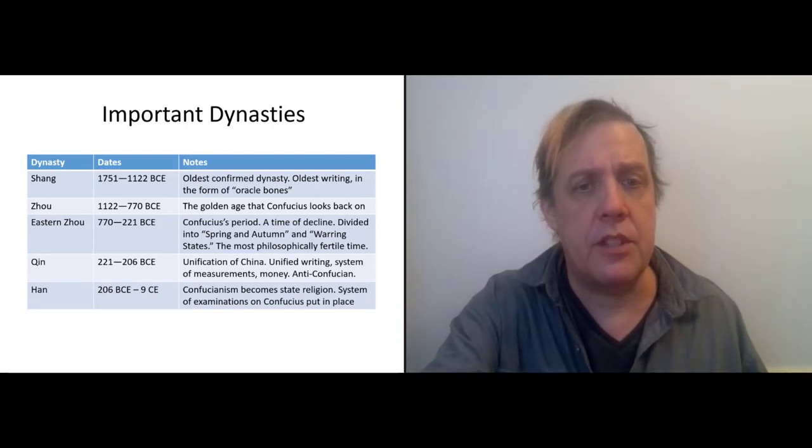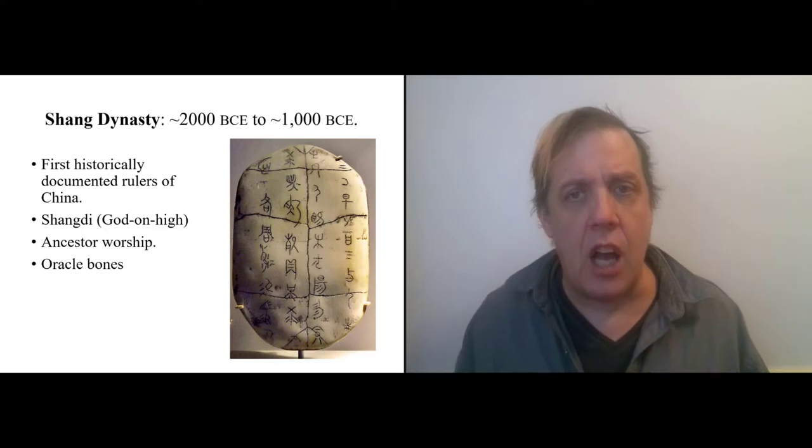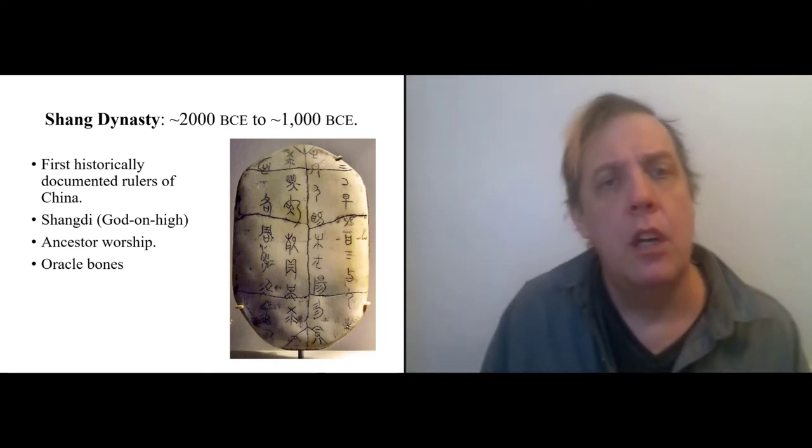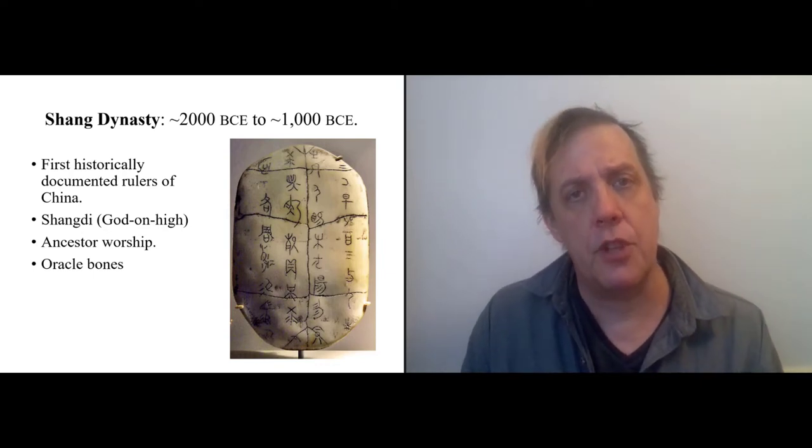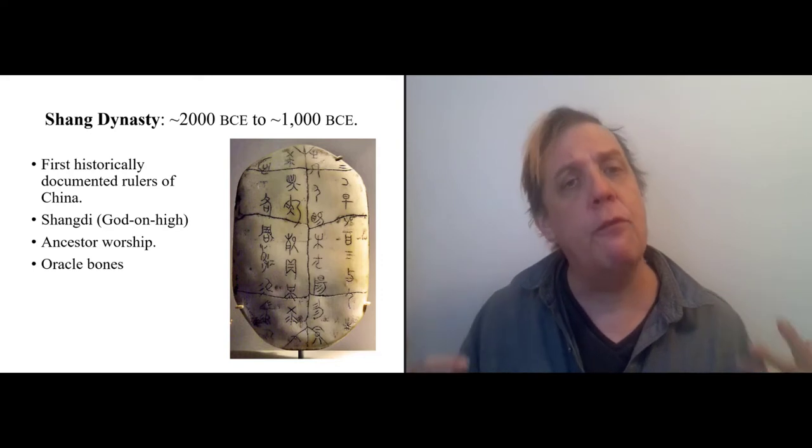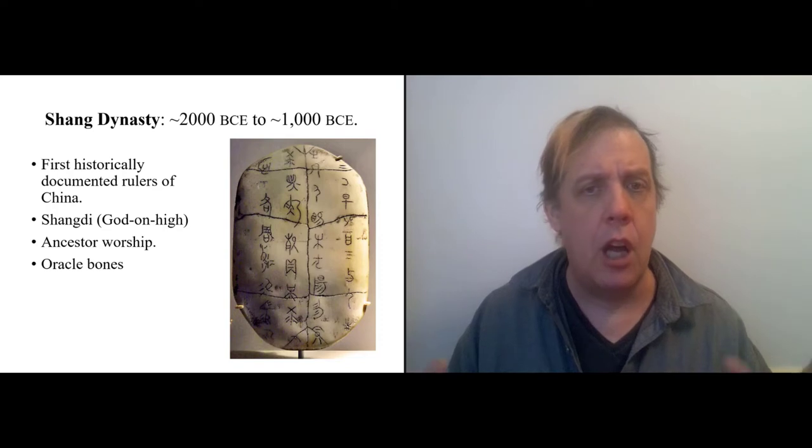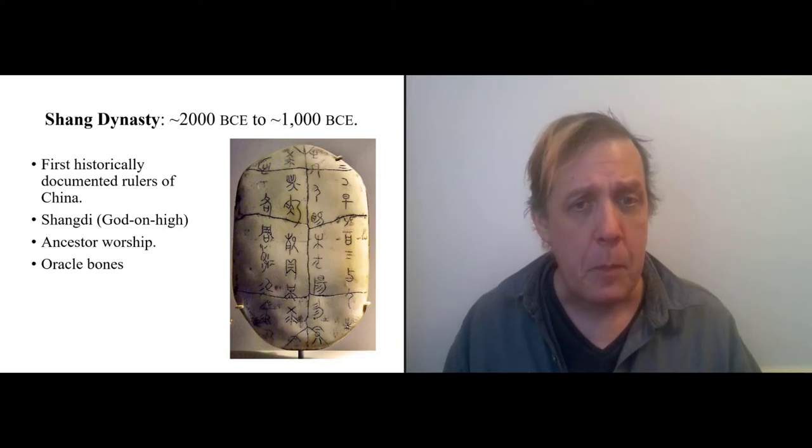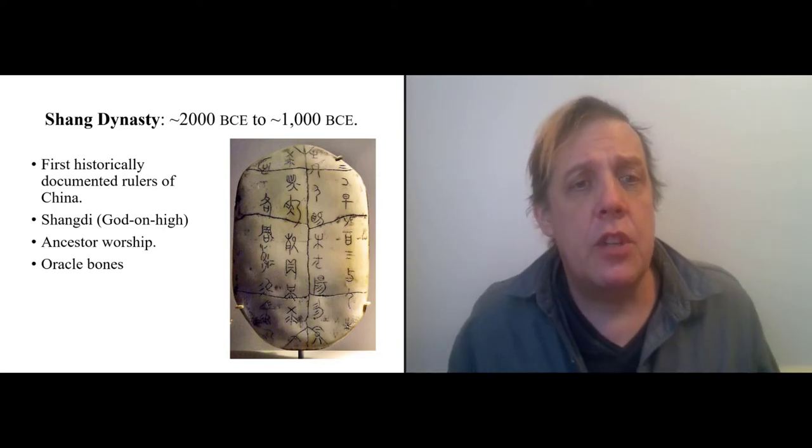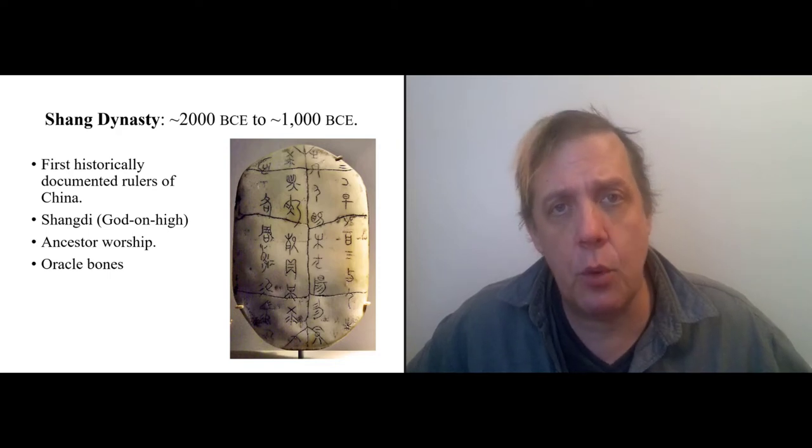So I'm just going to hit some of these details, each of these dynasties in a little bit more detail. So the Shang give us the first historically documented rulers of China. There are legendary rulers tied to Chinese gods prior to the Shang, but this is a period of time that we know of we can confirm archaeologically. So the Shang worshipped a god called Shangdi, the god on high, and they practiced ancestor worship.